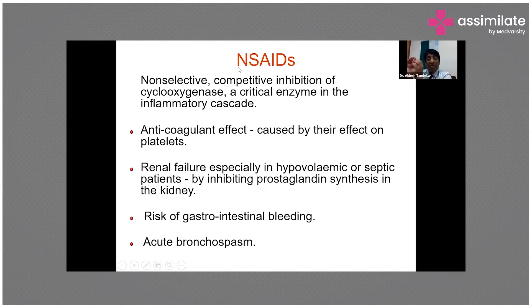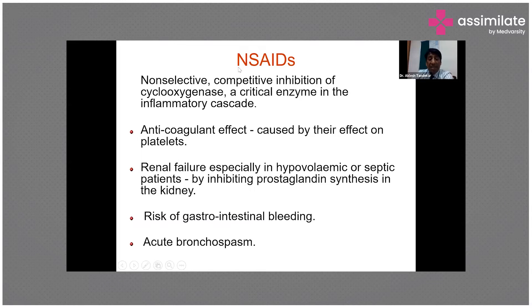In patients with renal failure, especially those with sepsis, septic shock, or hypovolemic states, inhibition of prostaglandin synthesis in the kidneys causes hypoperfusion, and patients will develop renal failure. NSAIDs also carry a high risk of GI bleeding because they cause GI ulceration, and these ulcers can bleed and lead to torrential gastrointestinal bleeding.